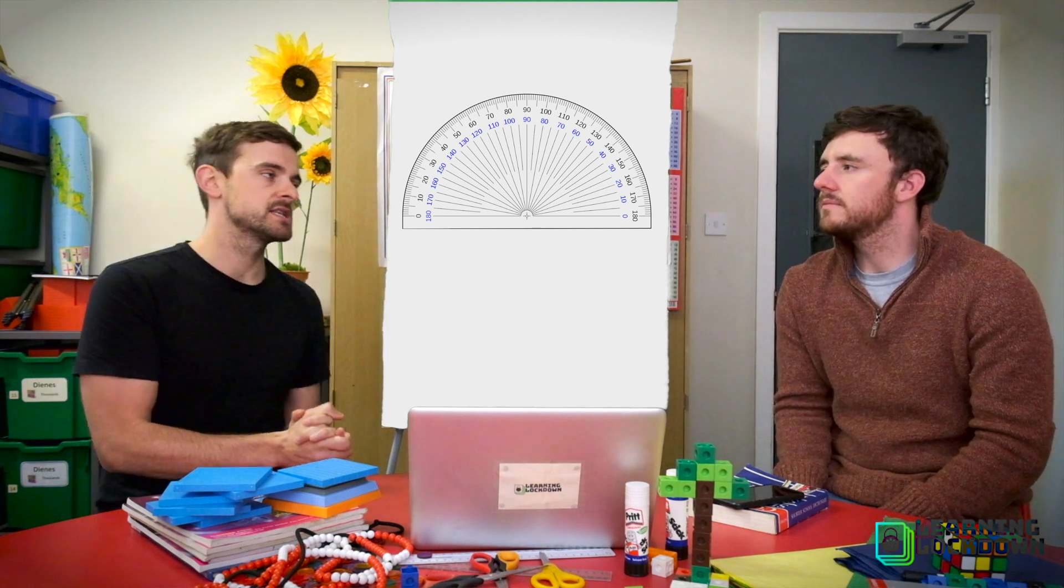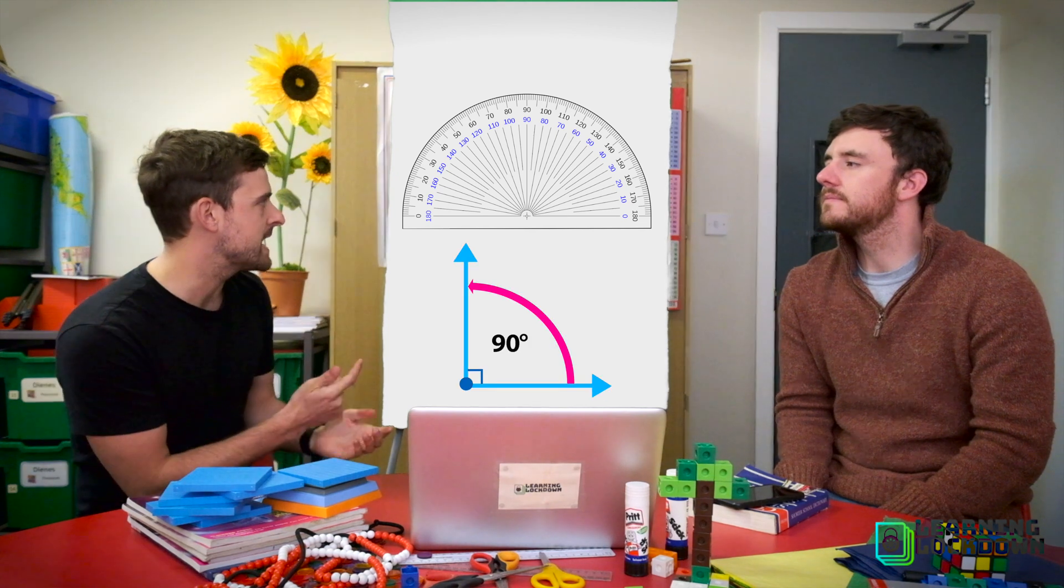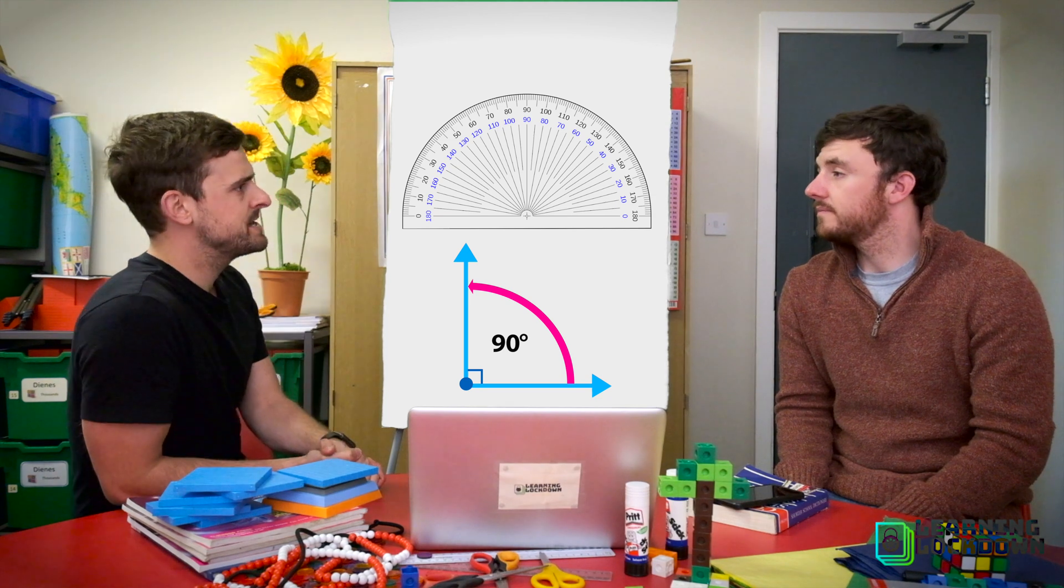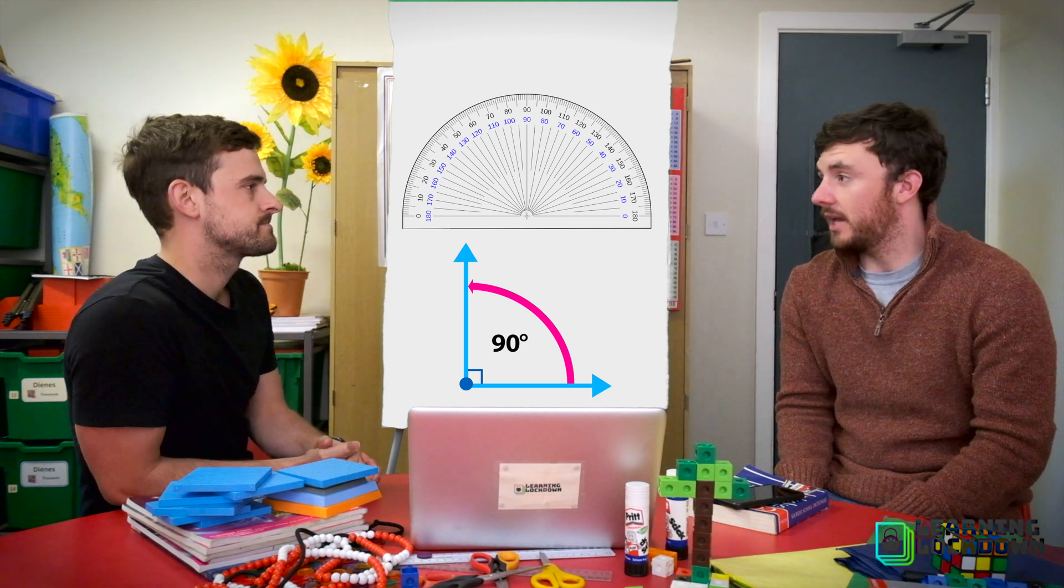And at the end of yesterday's lesson we introduced you to this man. Do you know what that was called again? It was a right angle. So how many degrees in a right angle Mr S? 90.